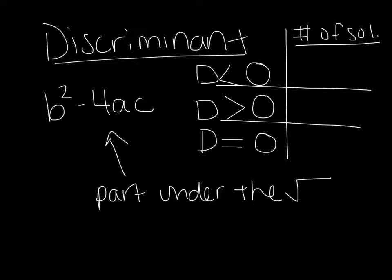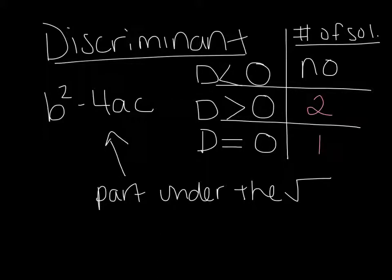Your discriminant is just the number that goes underneath the square root — the b squared minus 4ac part — and we'll deal more with that when we start doing some problems. If the discriminant is less than 0, there are no solutions. If the discriminant is greater than 0, there are two solutions. And if the discriminant is equal to 0, there is one solution.